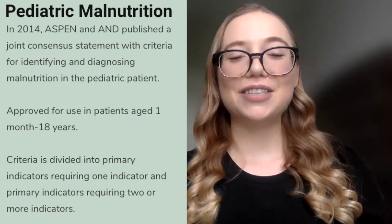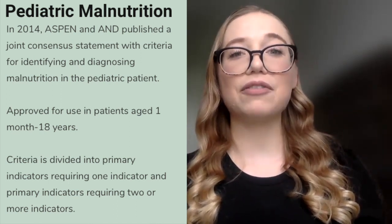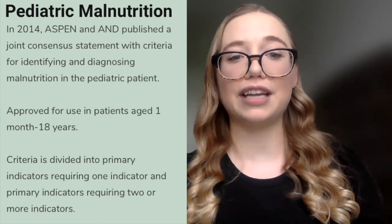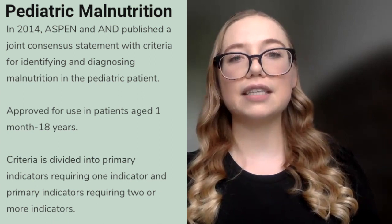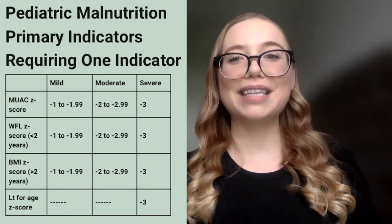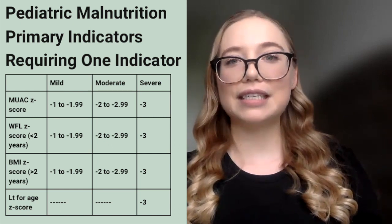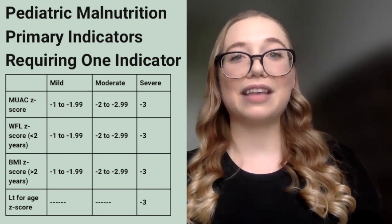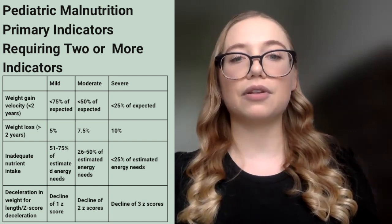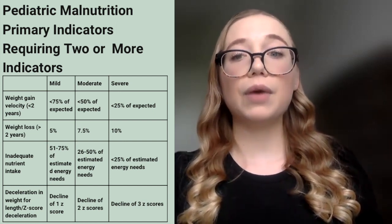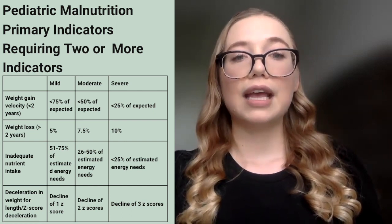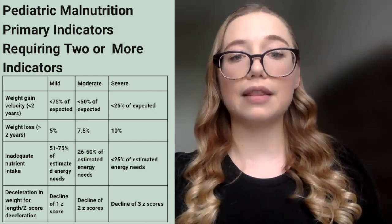Pediatric malnutrition criteria was created in 2014 from ASPEN and AND after they published a joint consensus statement for identifying and diagnosing malnutrition in the pediatric patient. Similarly to the neonatal criteria, this is divided into two categories. We have primary indicators requiring one indicator — these are Z-score-based and include mid-upper arm circumference Z-scores, BMI-for-age Z-scores, weight-for-length Z-scores, and length-for-age Z-scores. We also have primary indicators requiring two or more indicators, which can expand to include percentage of expected weight gain velocity for children under two years, weight loss for children greater than two years, inadequate nutrient intake, and deceleration within the weight-for-length Z-score.